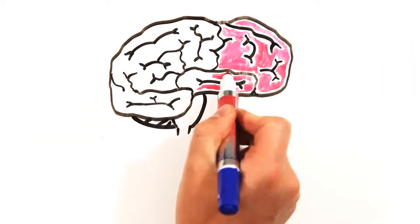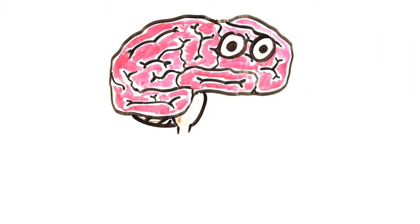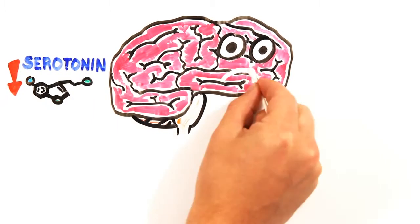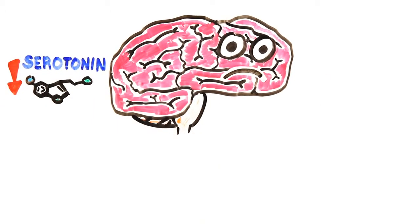In the past, depression was often described as simply a chemical imbalance in the brain. Specifically, scientists believed that a lack of the neurotransmitter serotonin was to blame, which is often referred to as the feel-good chemical.